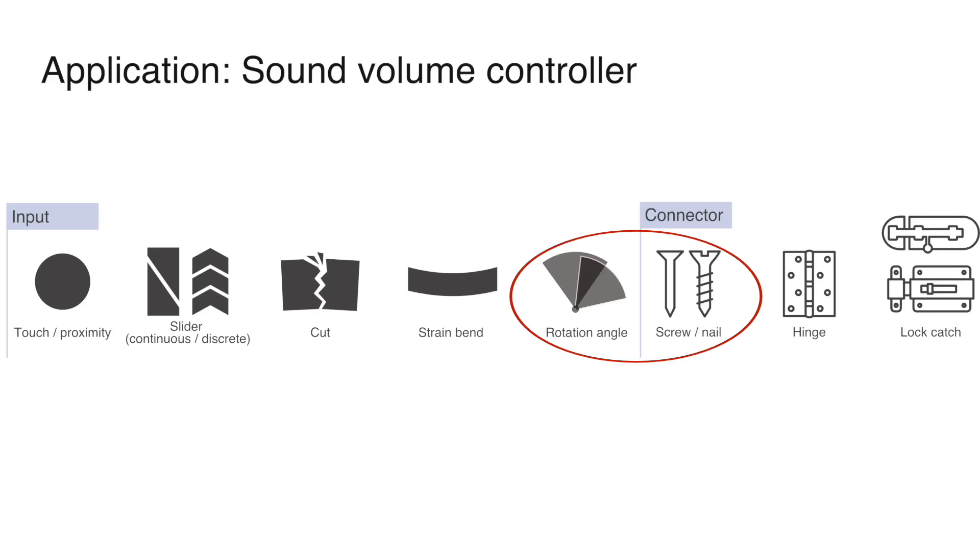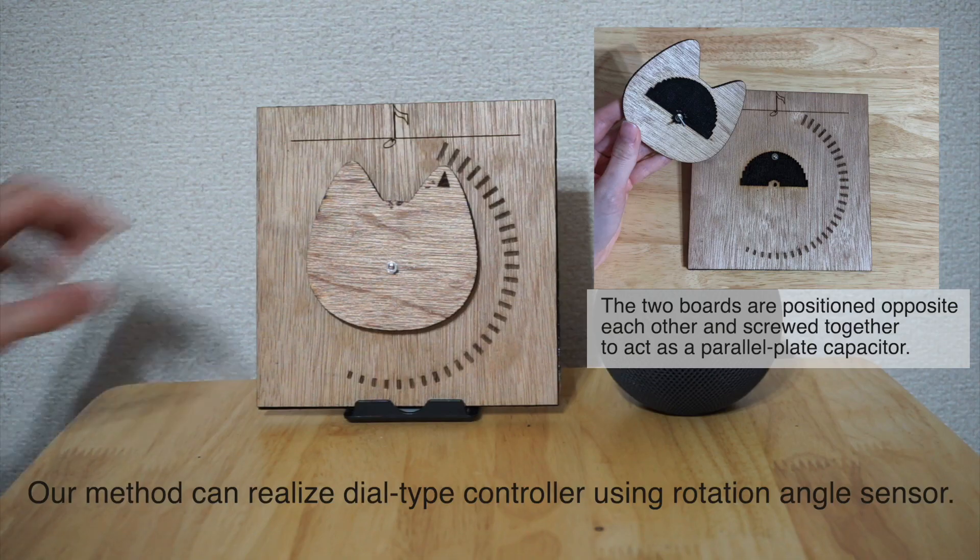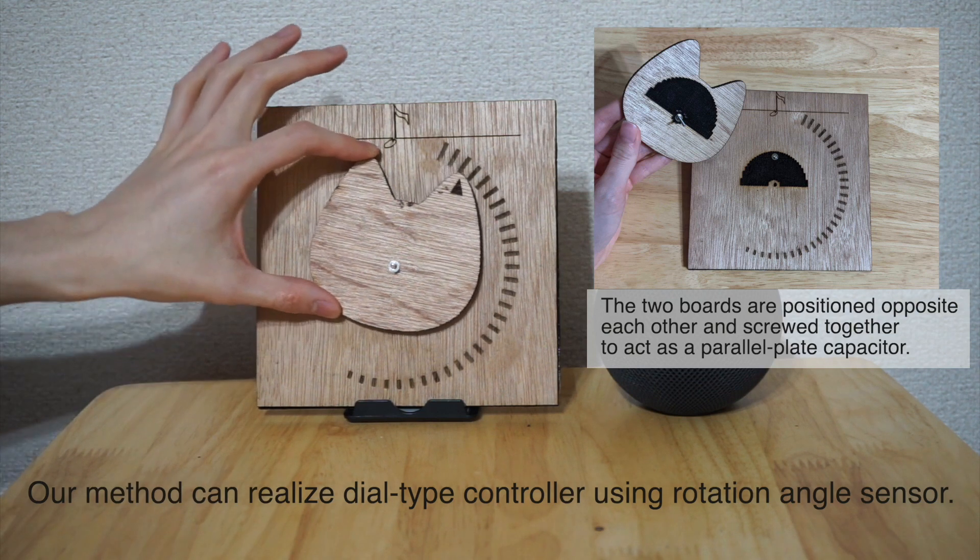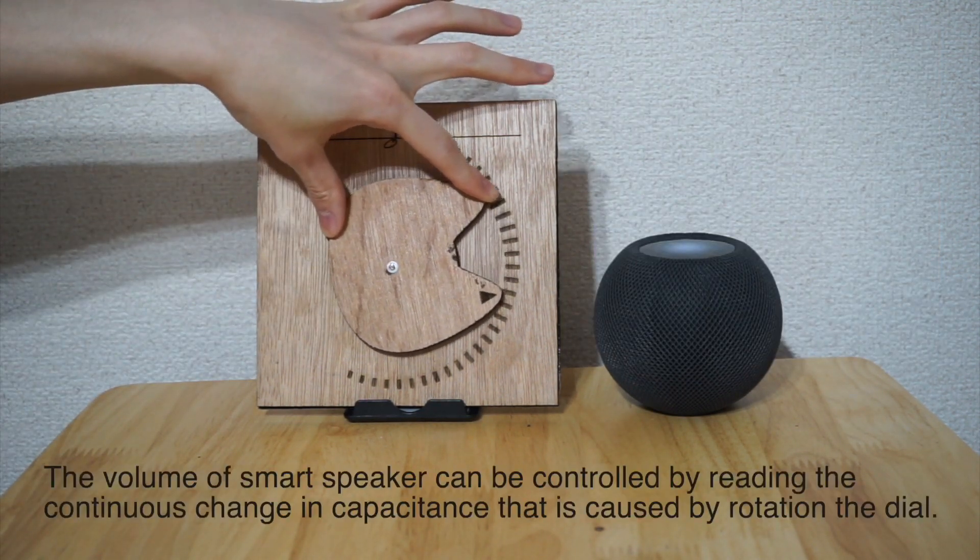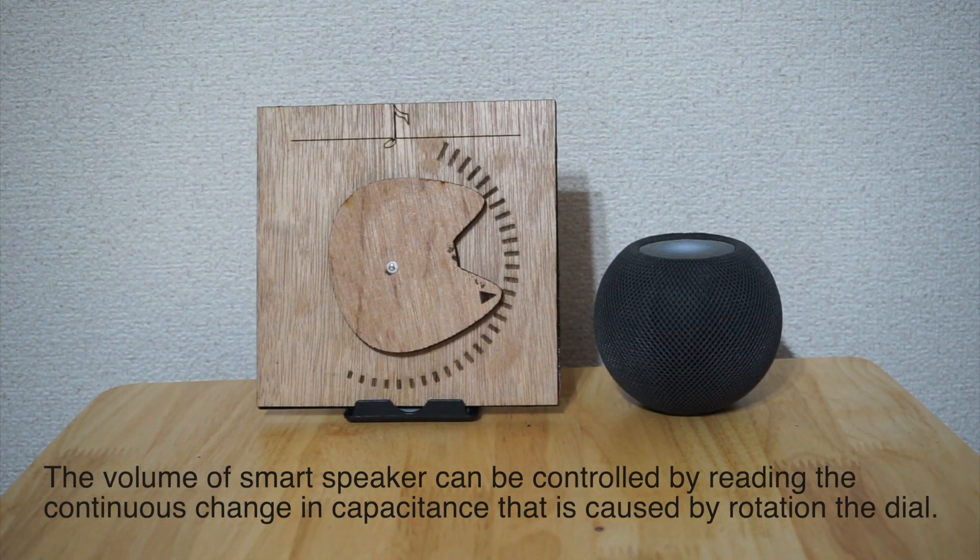Application to sound volume controller. Our method can realize dial type controller using rotation angle sensor. The volume can be controlled by reading the continuous change in capacitance that is caused by rotating the dial.